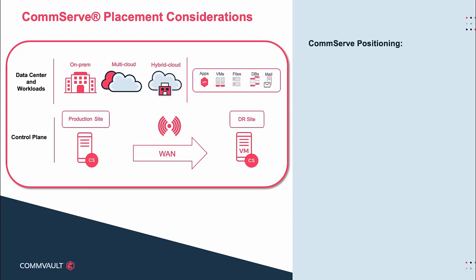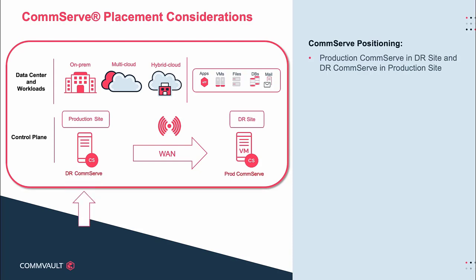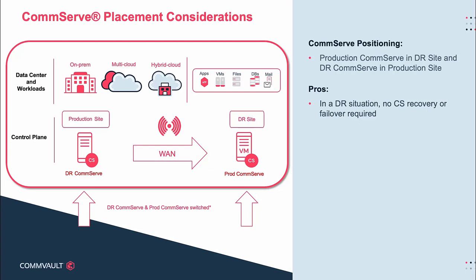The production CommServe could be placed in the DR site, having less operational capacity than the production site, and the DR CommServe could be in the production site. In this situation, a CommCell disaster at the production site would not impact the production CommServe, and it would not need to be recovered or failed over. However, it is important to understand that WAN availability is a critical factor in the success of such a deployment.